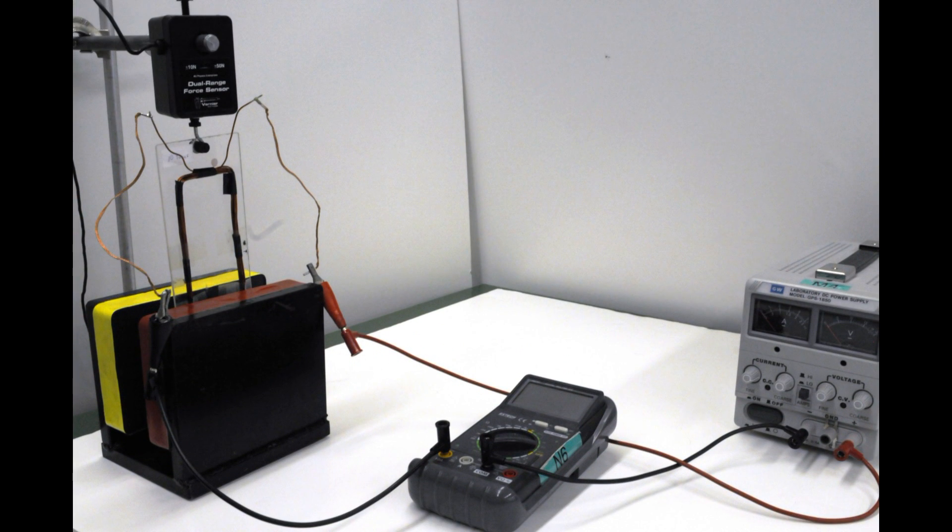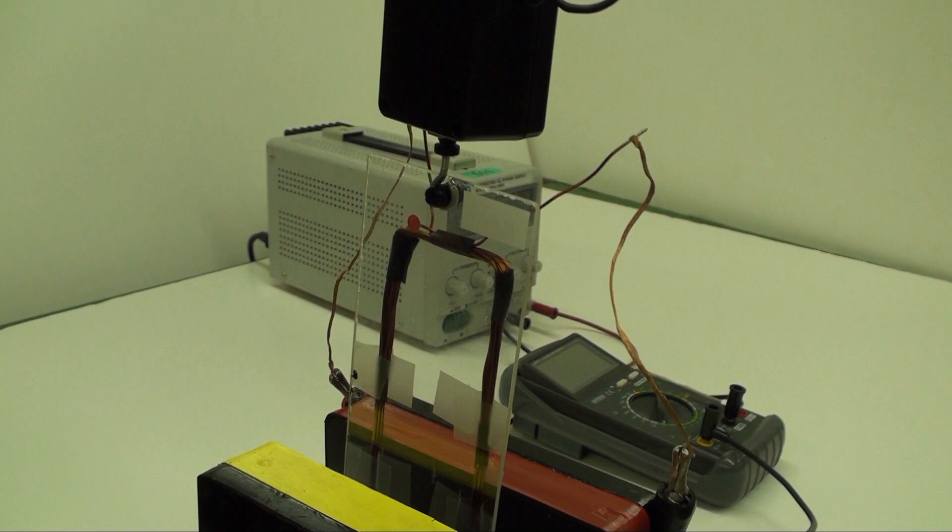Here's the setup we'll be using. The coil is hanging vertically from a force sensor placed between the poles of a relatively powerful magnet. Science Workshop measures the amount of force. The power supply is used to adjust the amount of current flowing through the coil. The ammeter measures the current. Notice that the ammeter is in series with the rest of the circuit, and that because relatively large currents are used, we use the yellow hole of the ammeter and set the current scale to read a maximum of 20 amps.